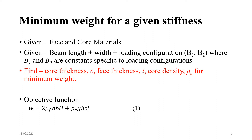What we have to find is the core thickness C, face thickness T, and core density rho_C for minimum weight. This design problem has an objective function. The total weight is the weight of the core plus the weight of both faces at the top and bottom — hence the factor of 2. We have rho_F (face density), acceleration due to gravity, T (face thickness), L (length, which is equal for core and face), and rho_C (core density).